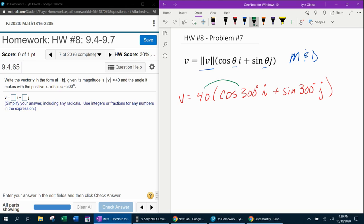We're going to need to distribute the 40 so that we can get the vector in standard form. That's going to be 40 times cos 300°. All of that is going to be the value for A, which is the coefficient of i. And then plus 40 times sin 300°. Whatever that works out to be will be the value for B, which is the coefficient of j.